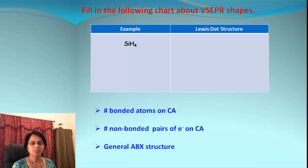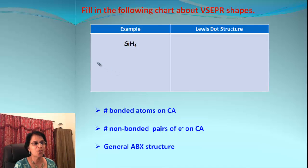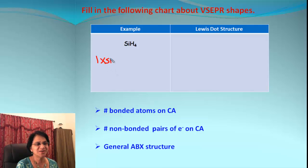To summarize boron trifluoride: the general ABX formula is AB3, the shape according to the table is trigonal planar, and it will look like the pictures shown.